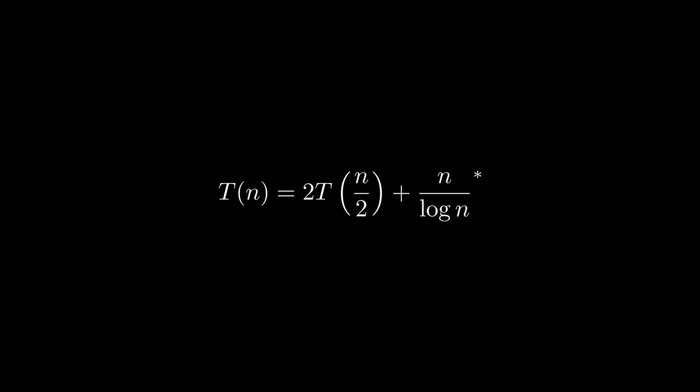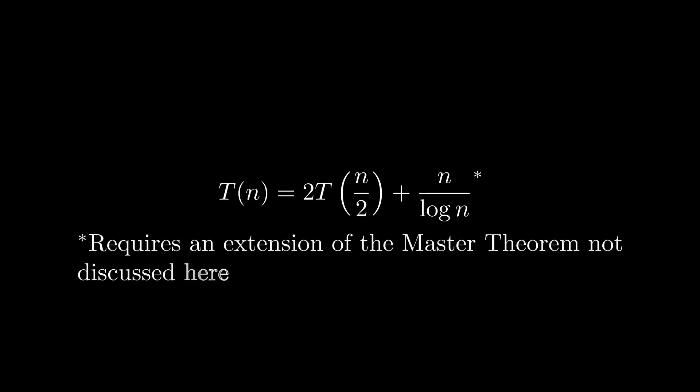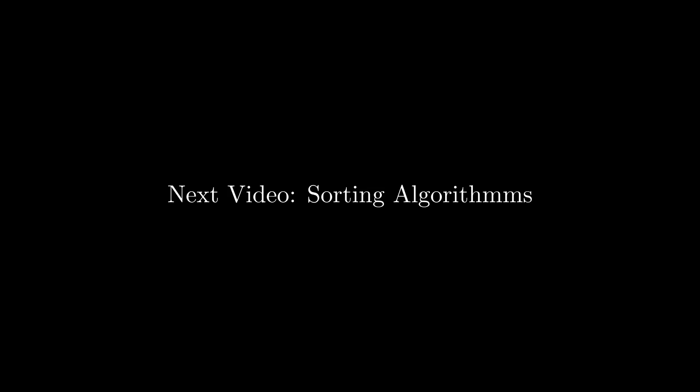It's worth noting that the master theorem is not completely exhaustive, and there are several recurrence relations which cannot be solved using the master theorem, including those that cannot be written in the form T(n) = A·T(n/B) + F(n). However, we will not deal with these relations in this lecture series. Now that we are familiar with how to calculate the runtime complexity of divide-and-conquer algorithms, we will investigate how divide-and-conquer can be used to construct efficient sorting algorithms in the next video. Until then, thank you for watching, and we'll see you next time.